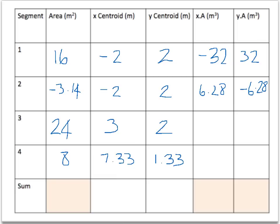For segment 3 we're going to get 3 times 24, which is 72, and 2 times 24, which is 48. And lastly, for segment 4, the XA value is 58.64, and our YA is 10.64.